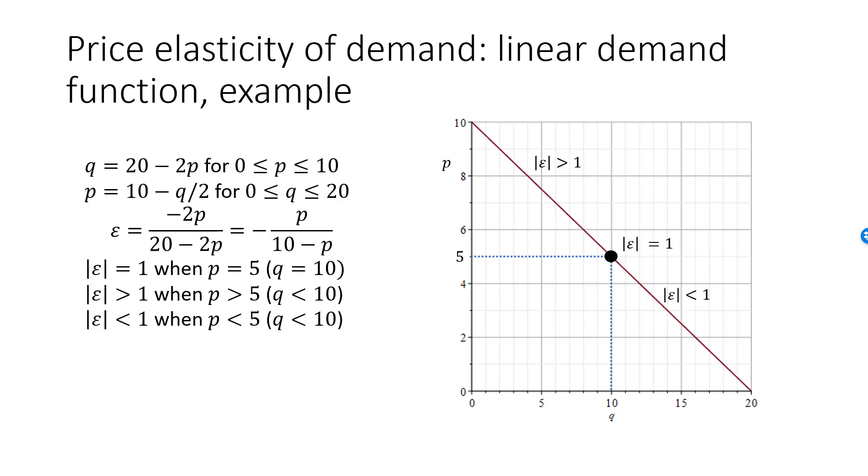Try P less than 5, say P equal to 4, then epsilon is minus 4 over 6, or minus 2 over 3. The absolute value of epsilon is less than 1, and demand is inelastic. Also note how the absolute value of epsilon continuously falls as we move along the demand curve from the upper left down and to the right.